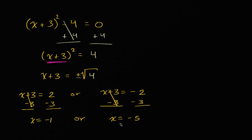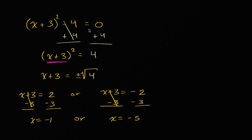You can verify that. Take these x values, substitute them back in. If you substitute x equals negative one, then x plus three is equal to two, two squared is four, minus four is zero. And when x is equal to negative five, negative five plus three is negative two, squared is positive four, minus four is also equal to zero. So these are the two possible x values that satisfy the equation.